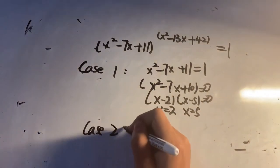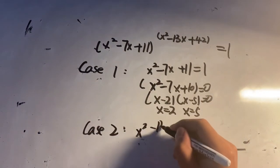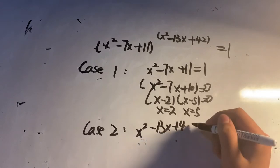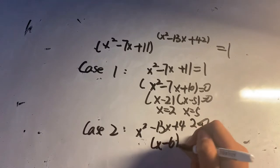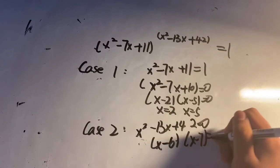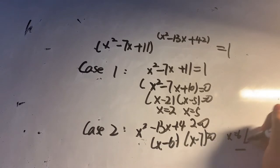Case 2: x squared minus 13x plus 42 equals 0. Factoring gives (x minus 6)(x minus 7) equals 0, so x equals 6 or 7.